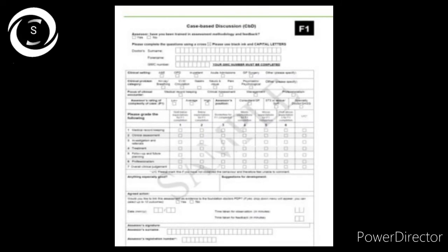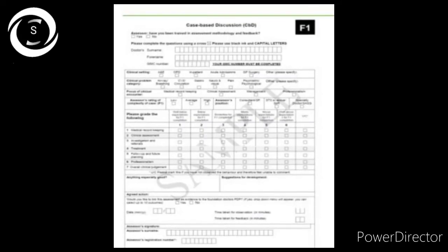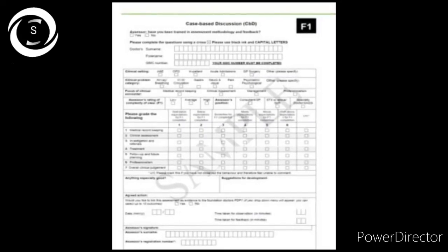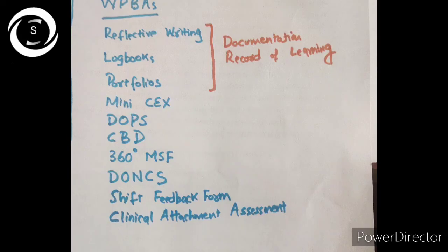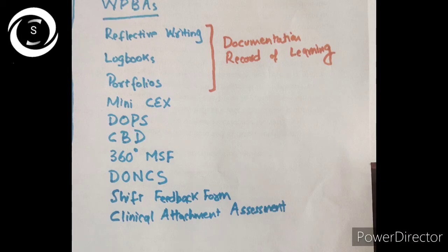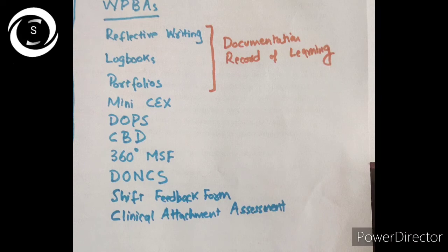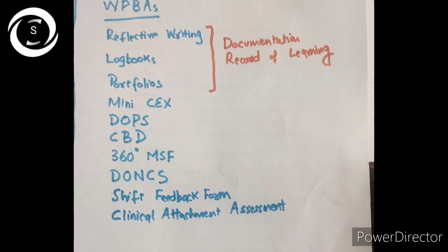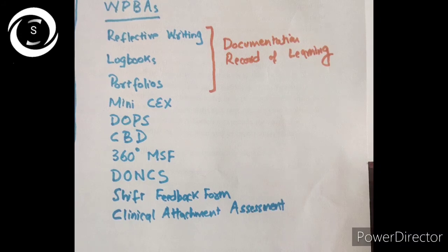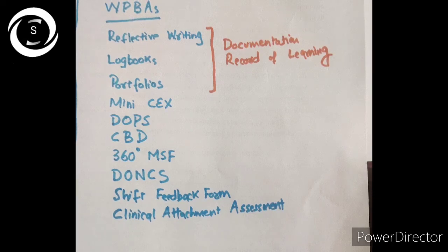Portfolios promote self-directed learning and critical writing. A CV with evidence is essentially a portfolio. A logbook is evidence to show achievements of required technical and non-technical skills. 360-degree multi-source feedback involves taking feedback from colleagues, professional team members, staff members — everyone that comes in contact with you at the workplace. It usually checks professionalism and teamwork.